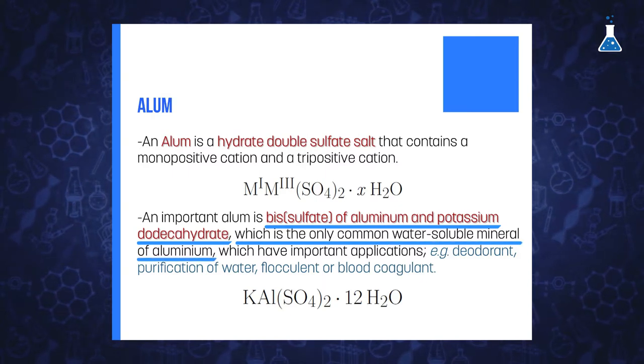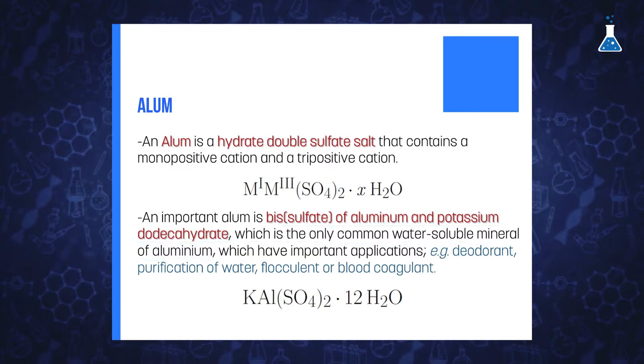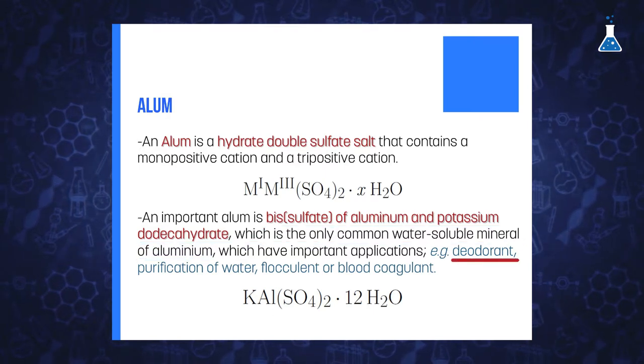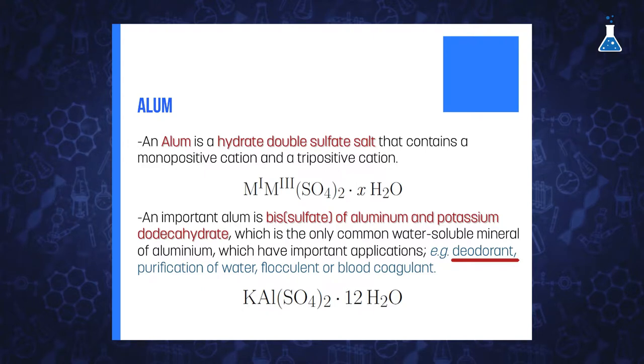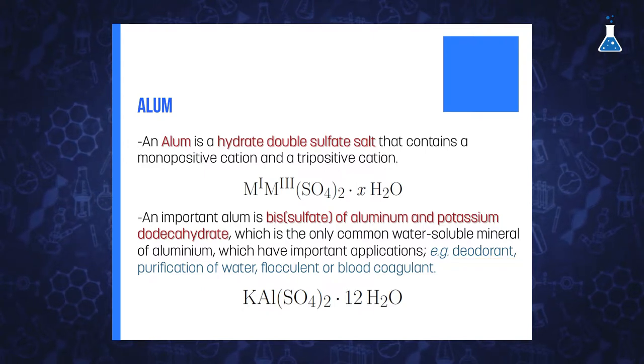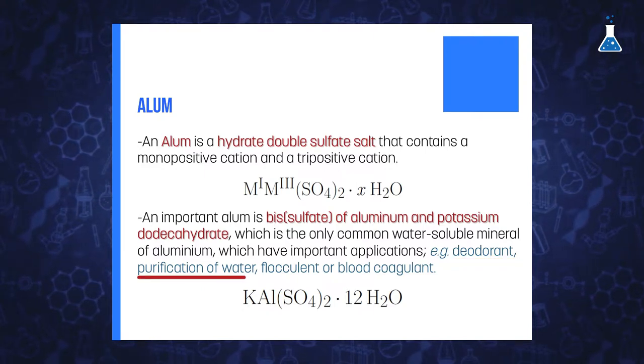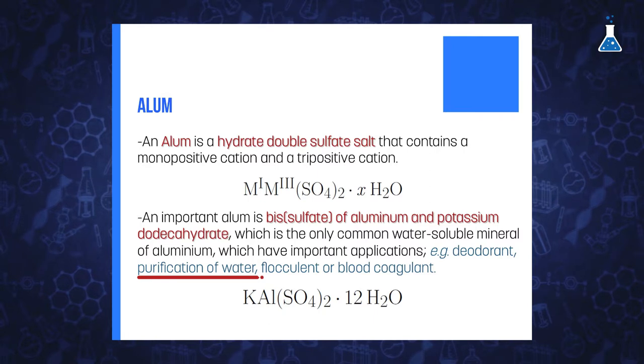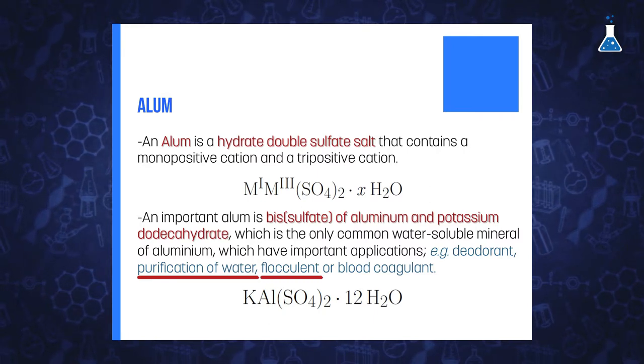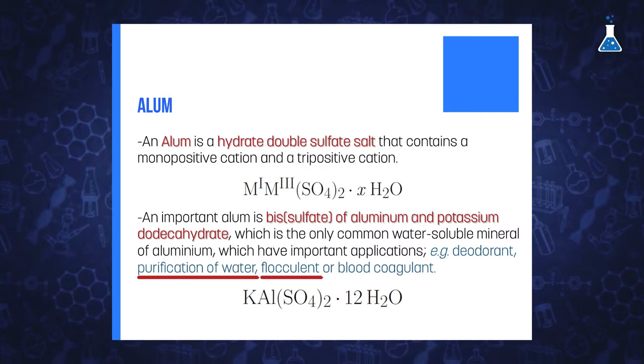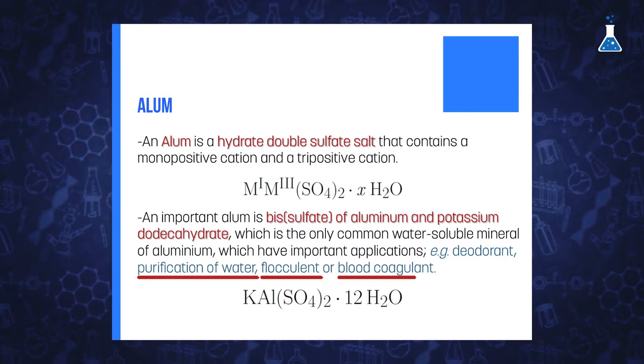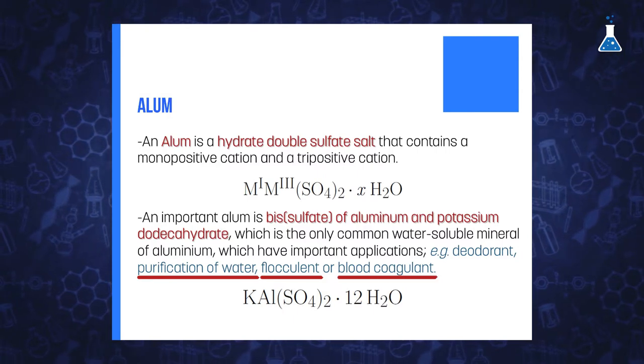Alum has been used for many years as ingredient of deodorant for its antibacterial properties. It is also known for its application for the purification of drinking water acting as a flocculant improving the ability to settle the particles, and it is used as blood coagulant to stop minor bleeding events.